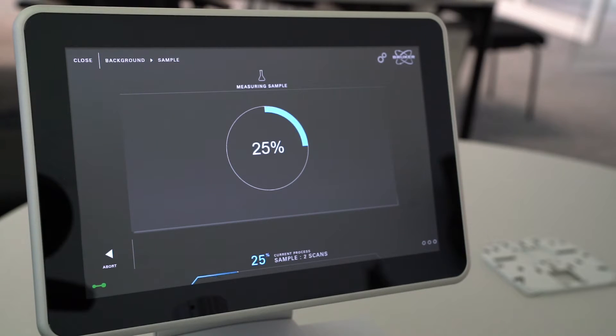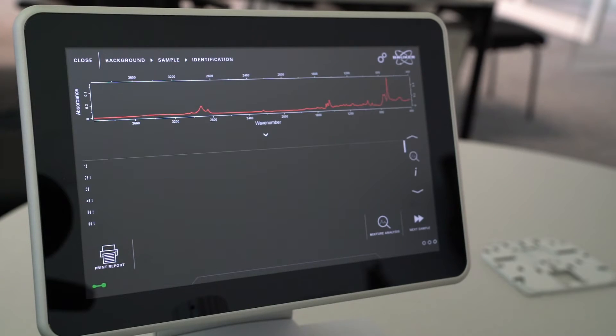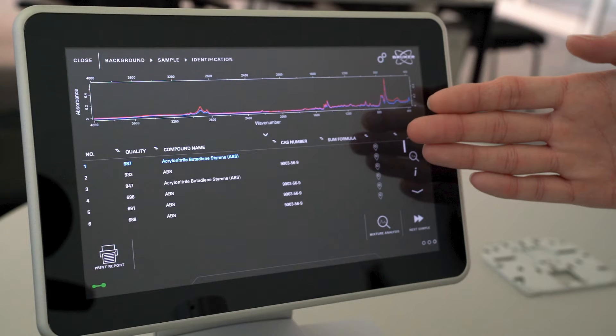Within seconds, the plastic piece is analyzed and a reference library search identifies it as ABS copolymer.